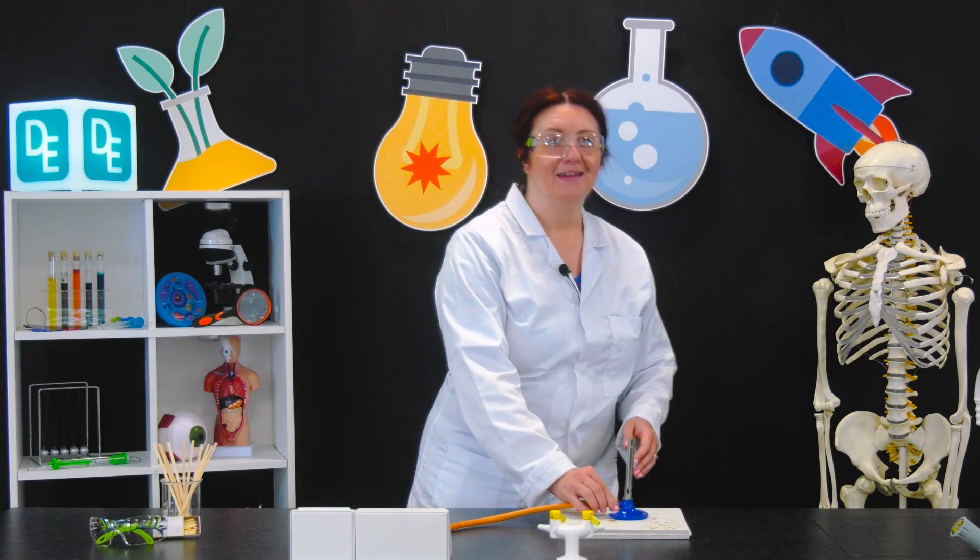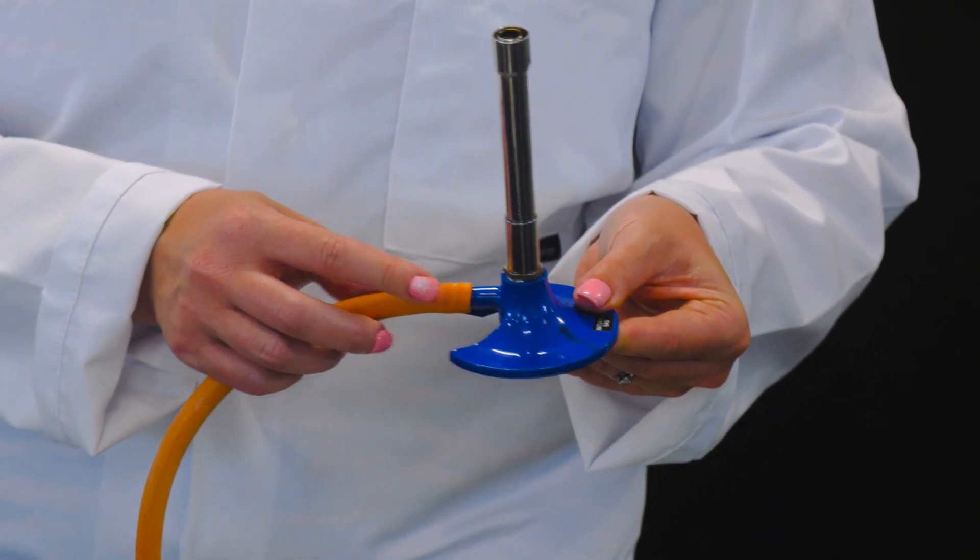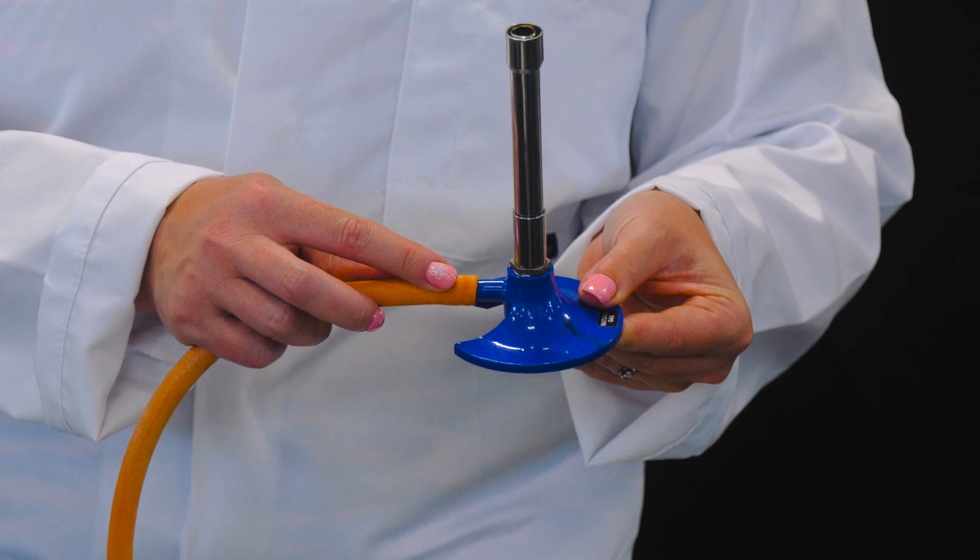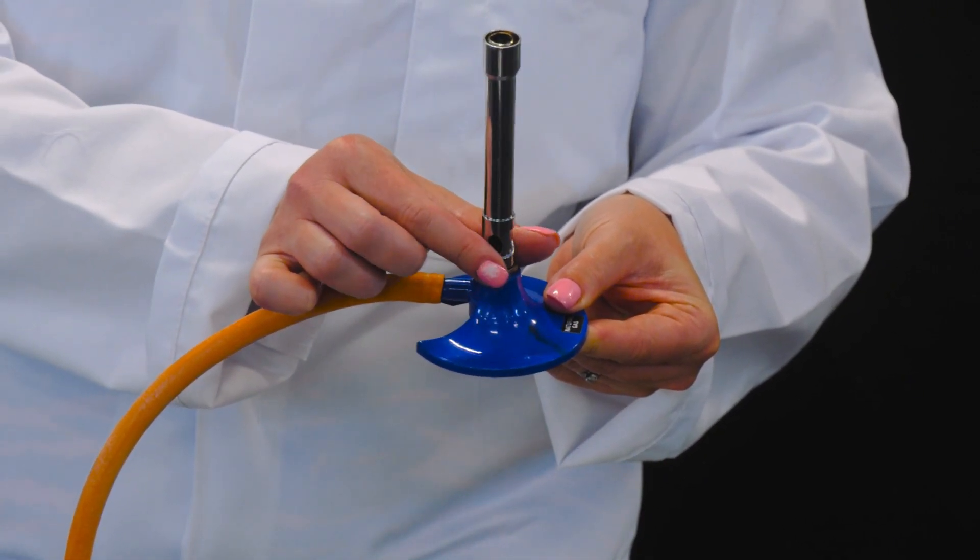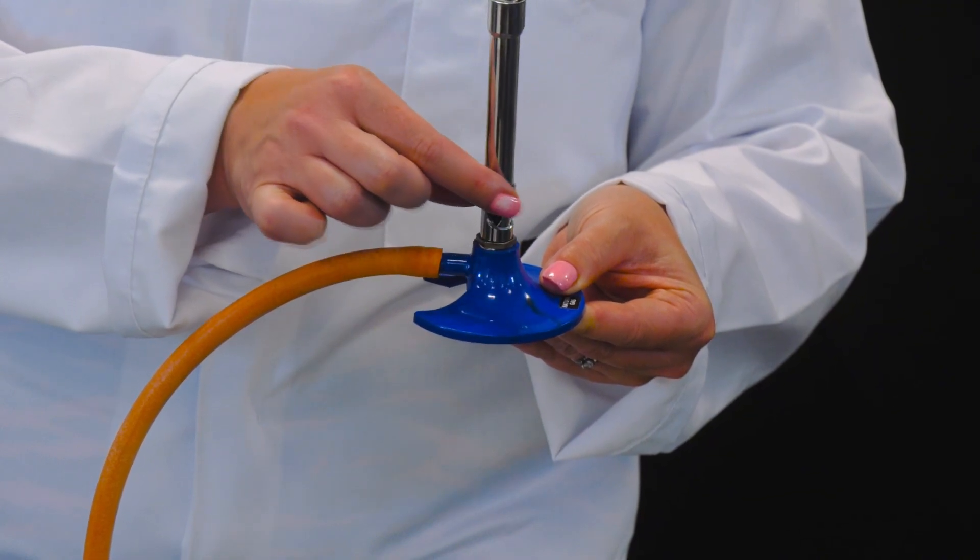Let's get familiar with the parts of the Bunsen burner. Here we have the base, the gas inlet, the air hole, and the collar. The collar controls the airflow, which affects the flame type.